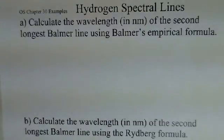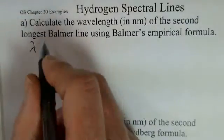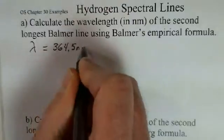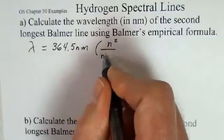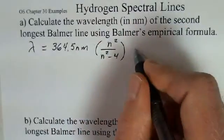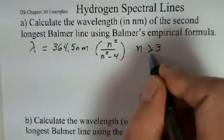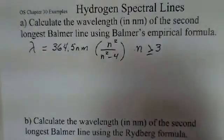We're told that we want the second longest Balmer line using the Balmer empirical formula. The Balmer formula tells us the wavelength of the line is 364.5 nanometers multiplied by an integer squared divided by that same integer squared minus 4, and the value of n has to be greater than or equal to 3. So 3, 4, 5, 6, on the list.